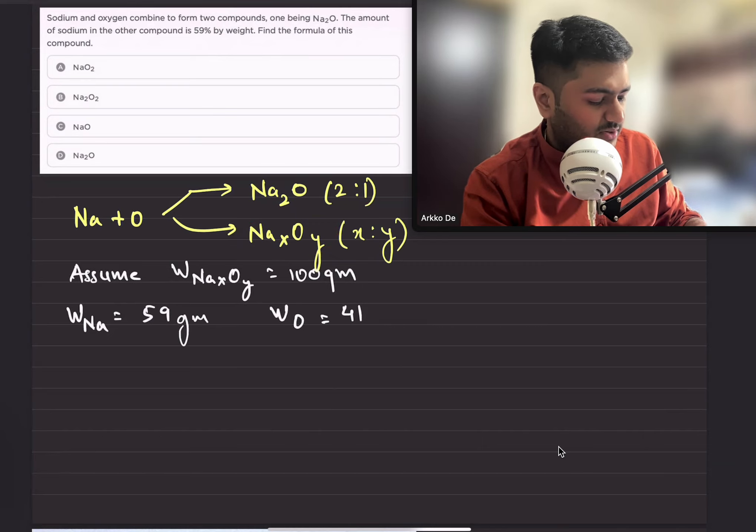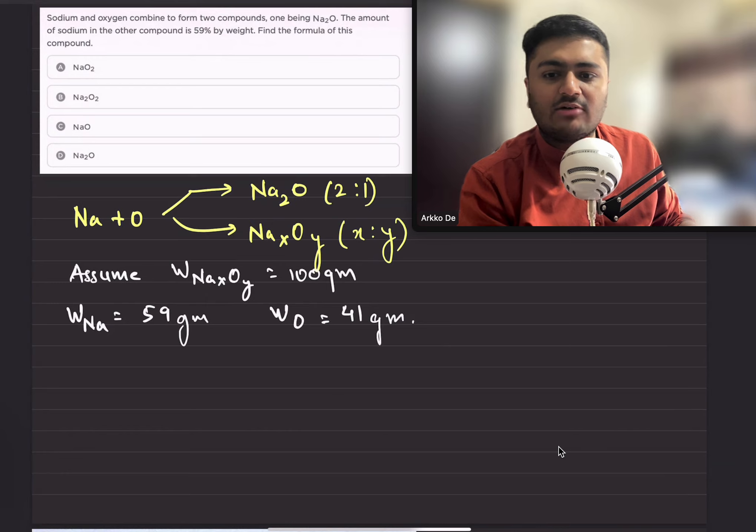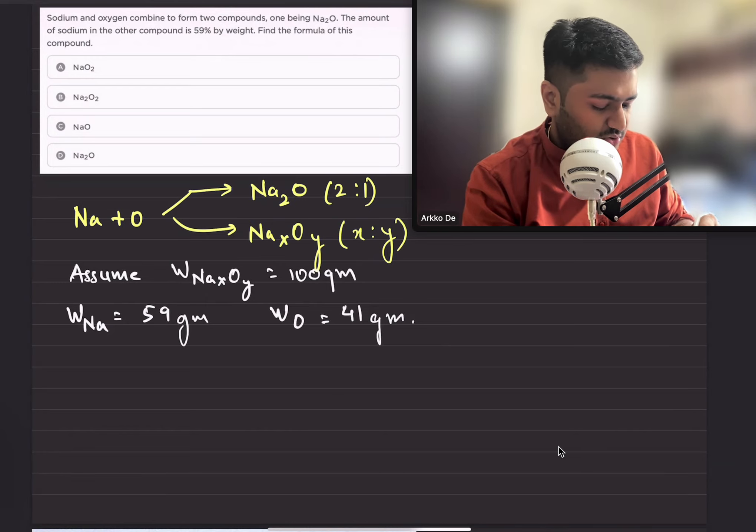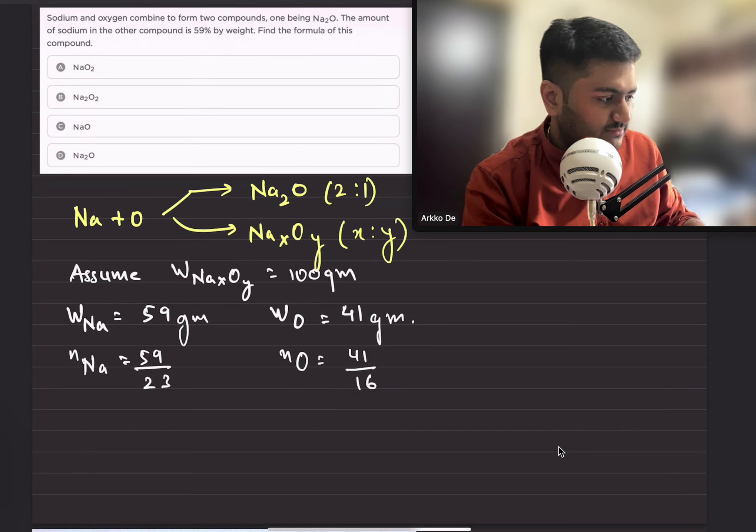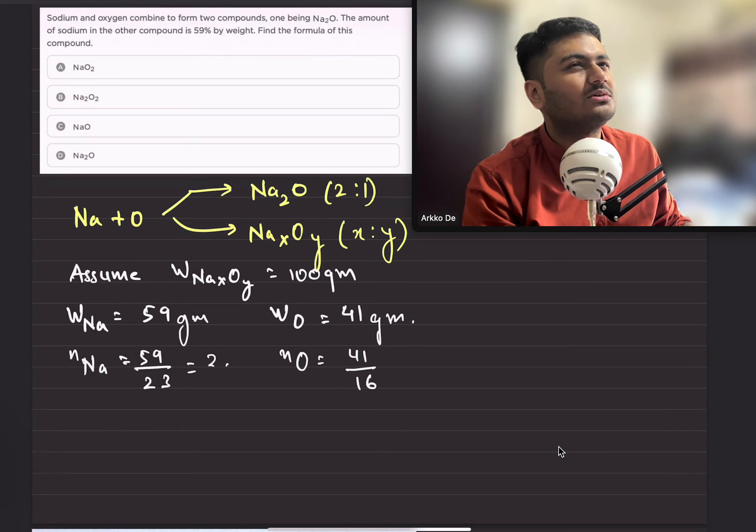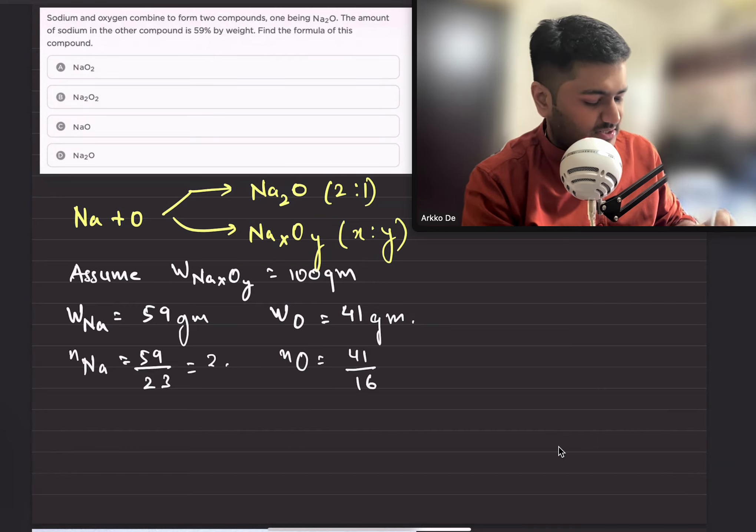Now let's calculate the moles of each element. Moles of sodium will be 59/23 and moles of oxygen will be 41/16. Now let's calculate: 59 by 23 will roughly come out to be 2.5 or 2.6.